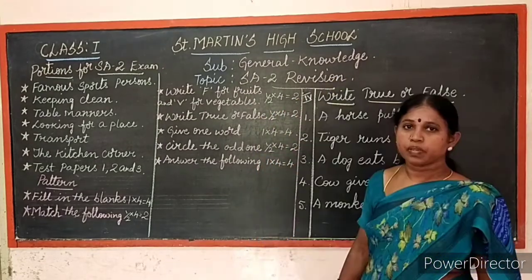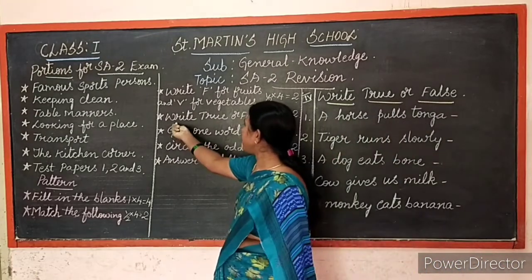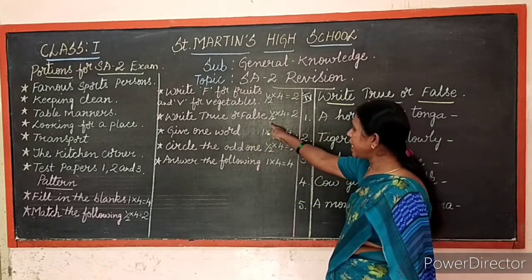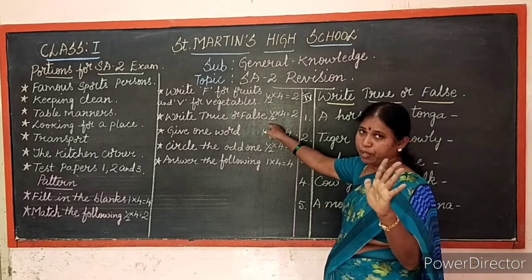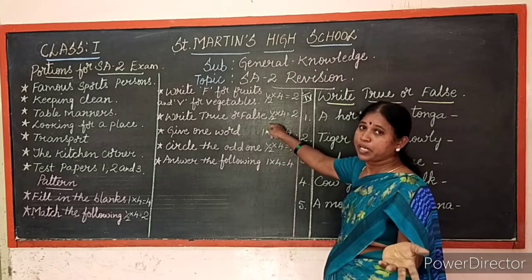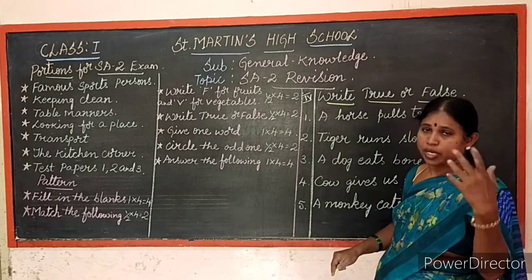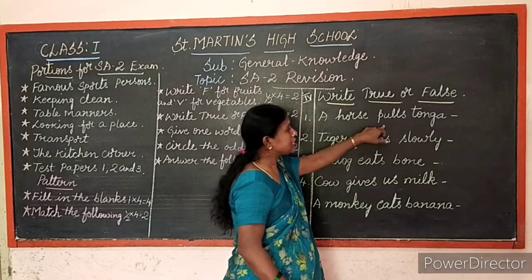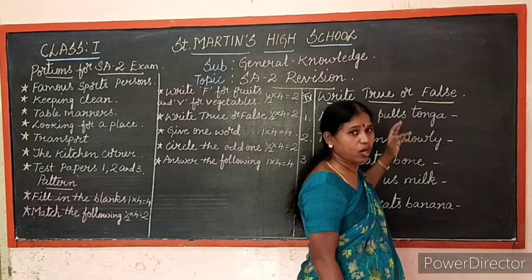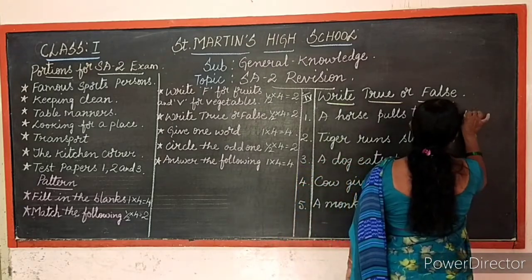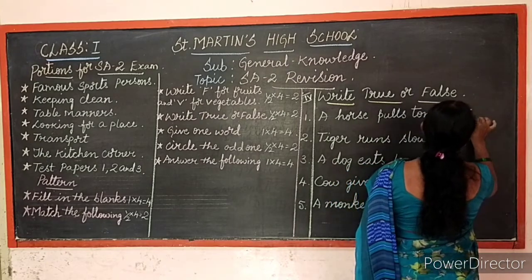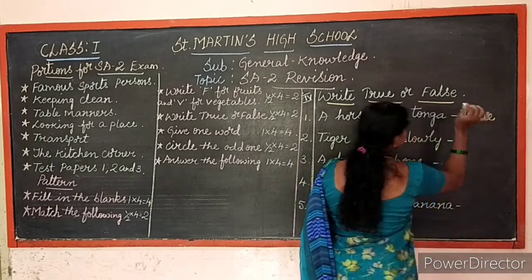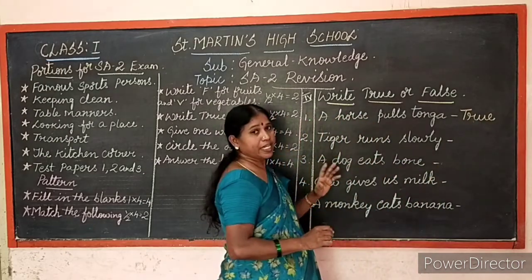Now we go for true or false. For each, if you write correctly you get half a mark. A horse pulls a cart — yes, that is true, so write T-R-U-E. Write the complete spelling correctly — four letters for true — to get half a mark.